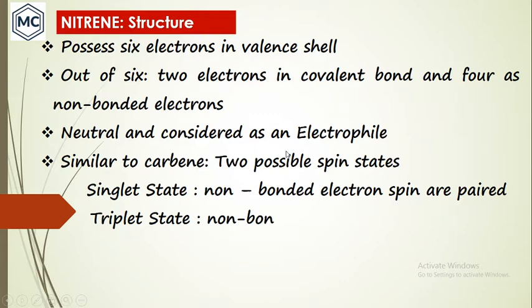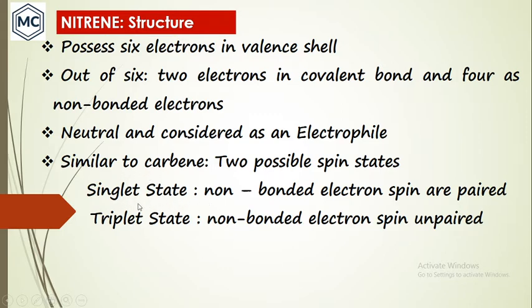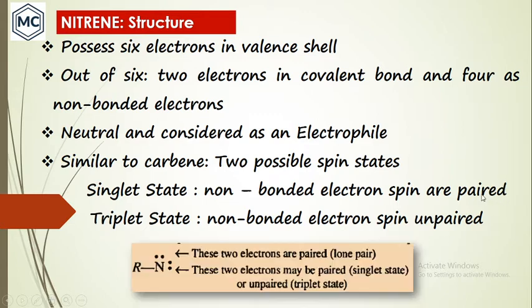The structure is similar to carbene. We know there are two types of carbene depending on spin state: singlet carbene and triplet carbene. Similarly, nitrene also depends on spin state — there is singlet nitrene and triplet nitrene. In singlet nitrene the electrons are paired (antiparallel), and in triplet nitrene they are unpaired (parallel).